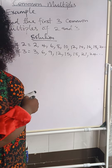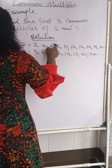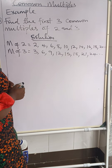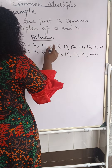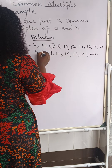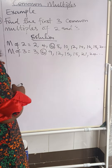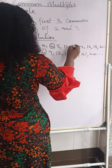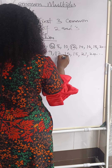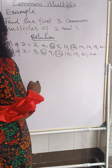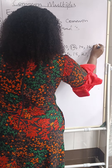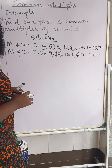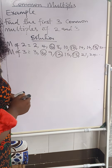Now, what are the common multiples? That is, any number that we see in both lists means it's common to both numbers. Looking at it, we can see six is here in the list of twos and also here in the list of threes. We can also see twelve is here and twelve is also there. Now we have eighteen — eighteen is here and eighteen is here.